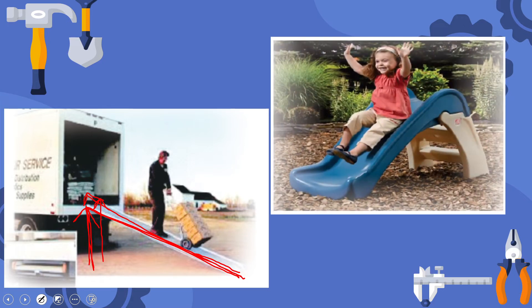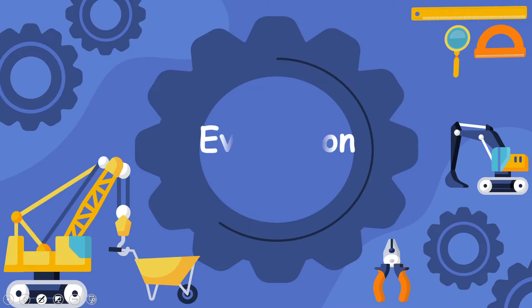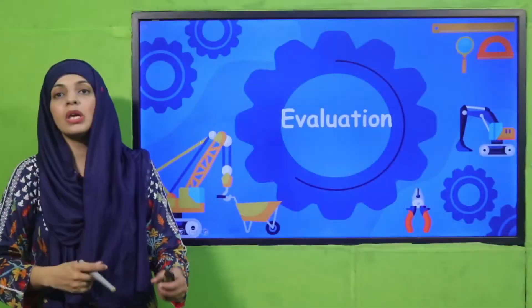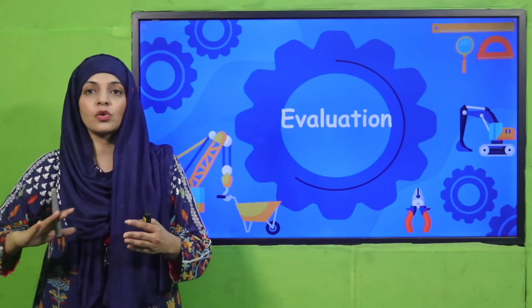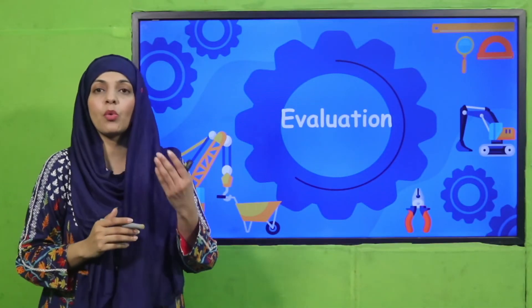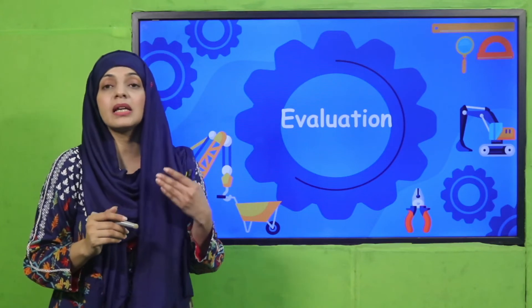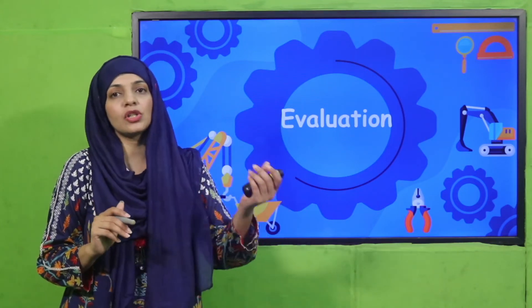Similarly, a slide is also an inclined plane, used for children to play on. Besides that, you will find an inclined plane in all your homes — in your garage or outside the house there is a ramp over which a motorbike, car, or cycle can easily be brought up and down.